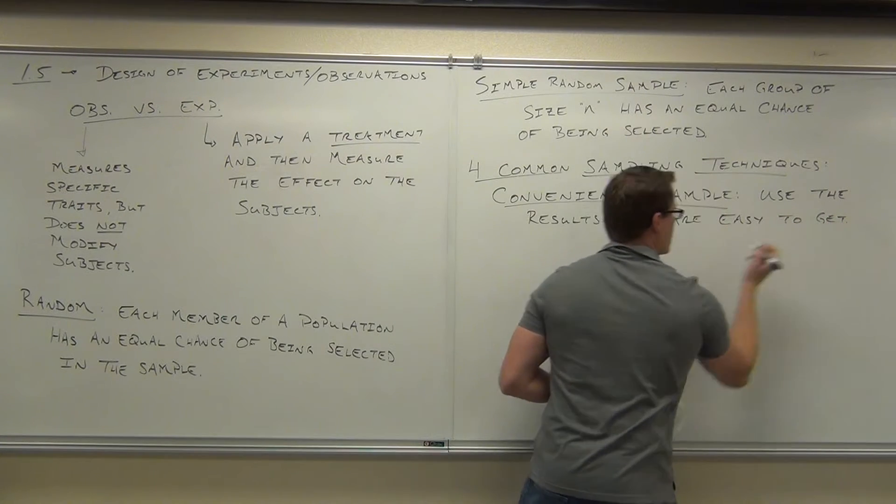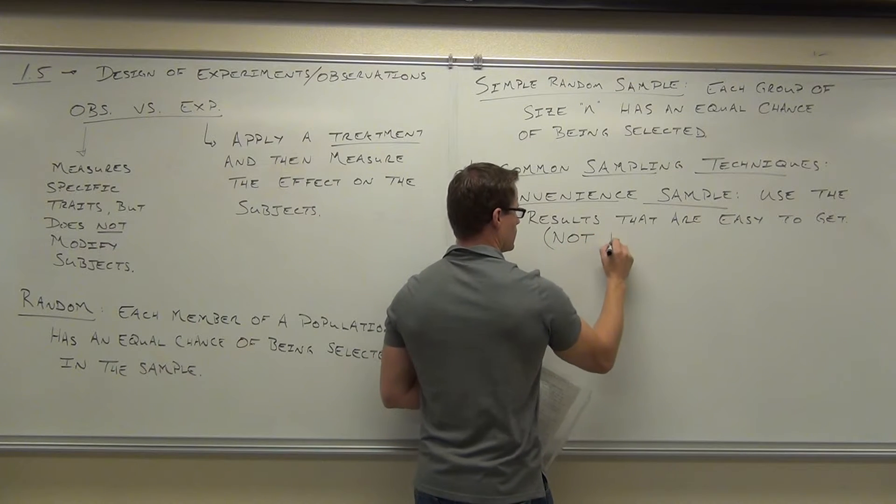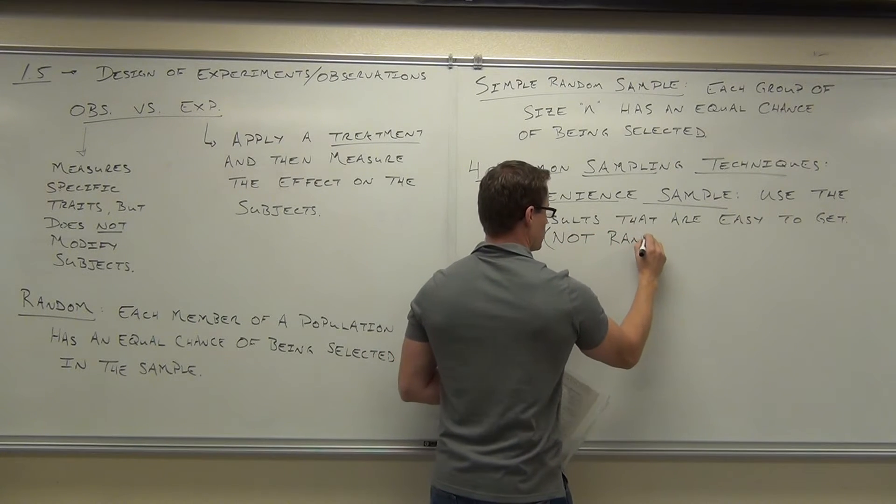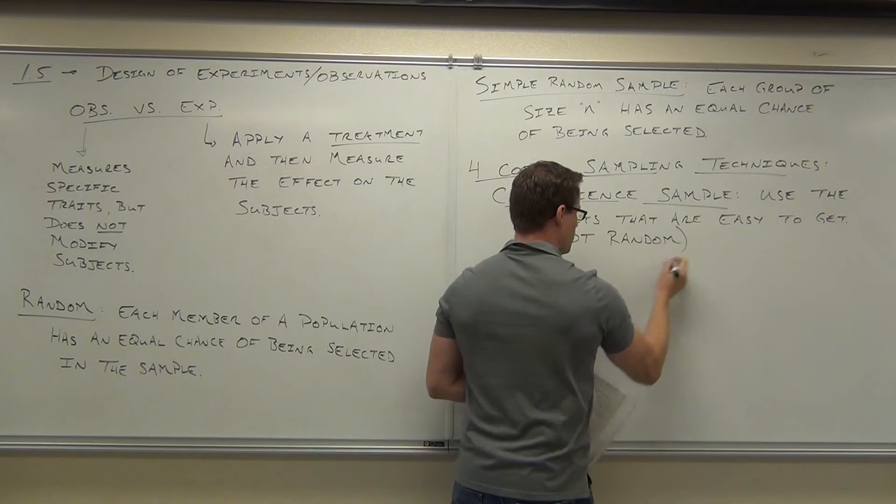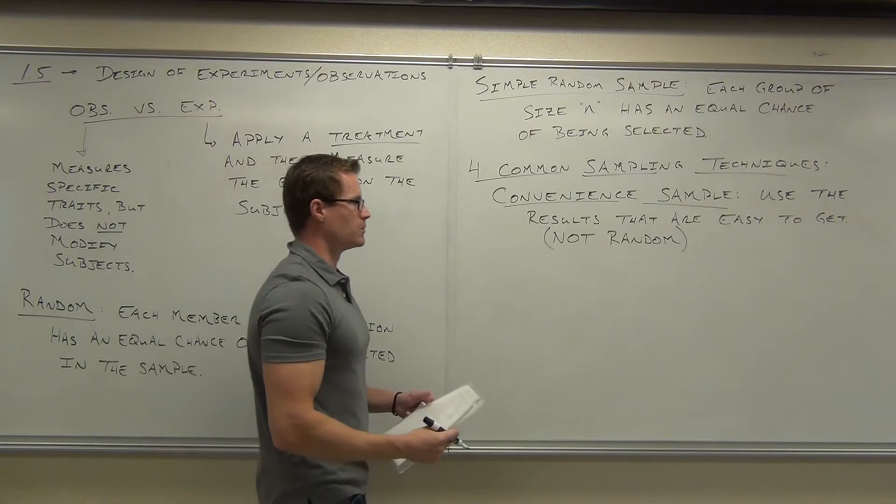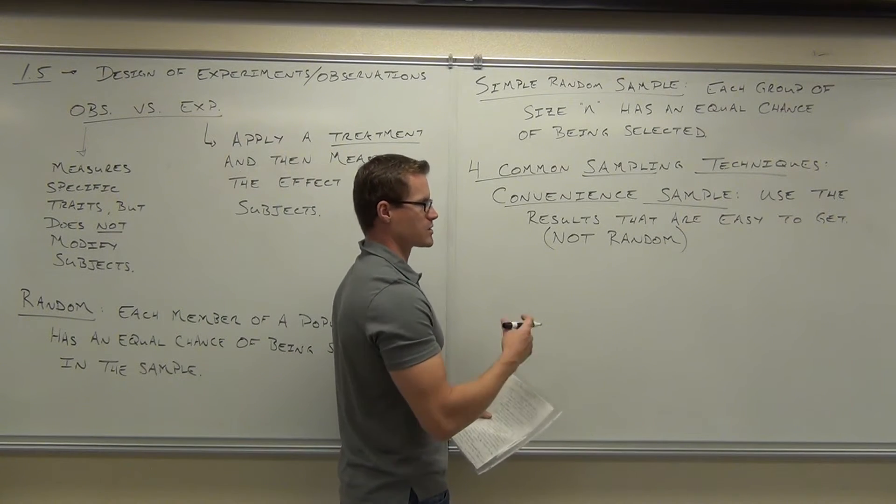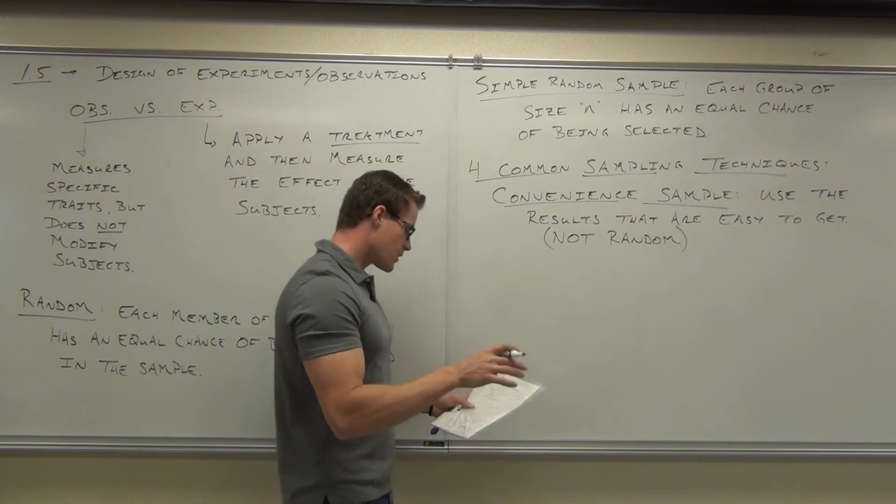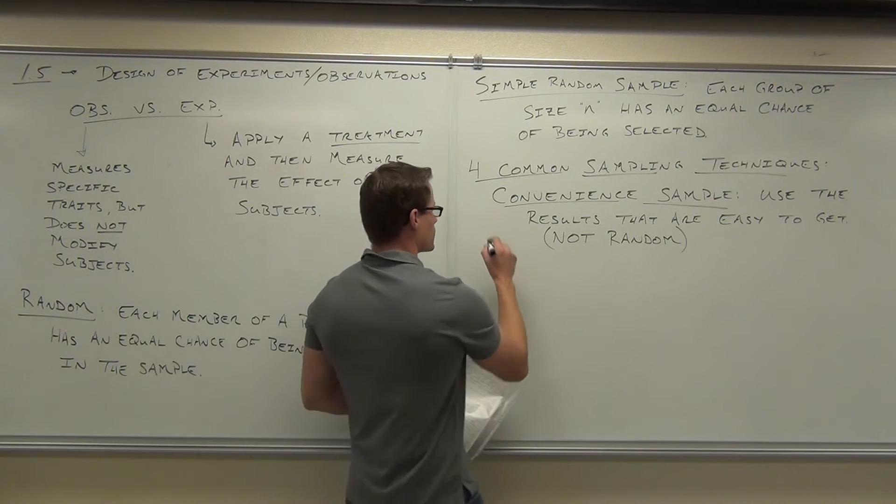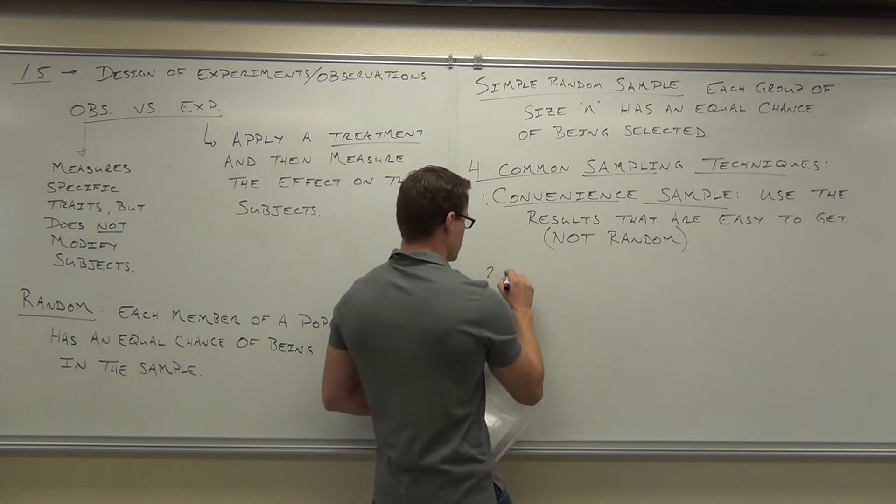Chances are this thing is not going to be random. And therefore, it's really never used in a realistic statistical basis of conducting an experiment, observation, collecting samples. The other ones are, though. The next one is called systematic sampling, so this is number two.